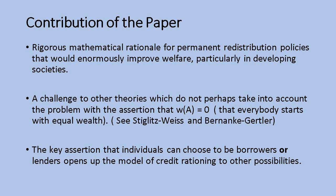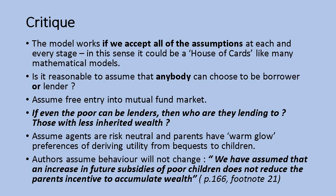It's an important paper in that it is well-built mathematically in terms of propositions building from one to another. It's convincing in how the mathematical model is constructed and the results that follow. It's a good challenge to other theories that don't take into account that people don't start with equal wealth. The authors take that and show things that turn traditional credit rationing models on their head — particularly the key assertion that individuals can choose to be borrowers or lenders, and will choose to lend when rates are sufficiently incentivized, including middle-class and poor people.